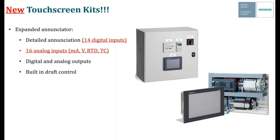These touchscreen kits can also have a built-in draft control program. When you option that in, it gives you the ability to do draft control straight from this panel. This draft control program is UL-listed and is used to control a stack damper, maintaining a specific set point of pressure on the furnace itself. This prevents negative pressure created by a very tall stack from sucking the flame off the burner head — you see draft control in places with really tall stacks, common in New York. It utilizes a Siemens actuator with a differential pressure transducer and a differential pressure switch to control the damper, maintaining a set point usually around negative one-inch water column.